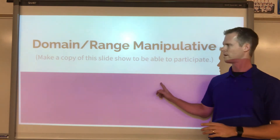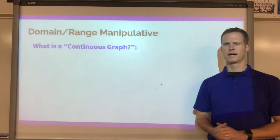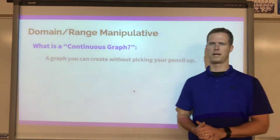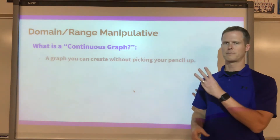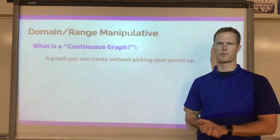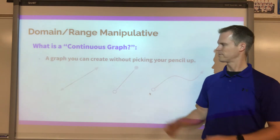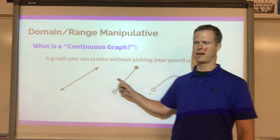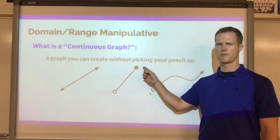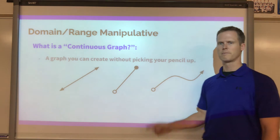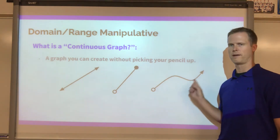Before we begin, we need to talk about what a continuous graph is. A continuous graph is a graph you can create without picking up your pencil. There are three types of graphs in this classwork: some graphs that start and end at arrows, some that have endpoints with open circles and closed circles, and some that have endpoints either open or closed and then finish with an arrow.